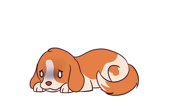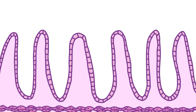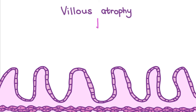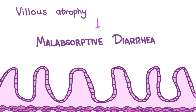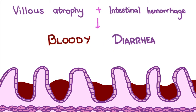The pup initially develops a fever as its body tries to fight off the infection. With the small intestinal crypt epithelium destroyed, there is villus atrophy, resulting in malabsorptive diarrhea. Intestinal hemorrhage also occurs, resulting in the characteristic bloody diarrhea in parvo cases. The mucosal barrier may also be disrupted, allowing gut bacteria to invade and potentially cause septicemia.